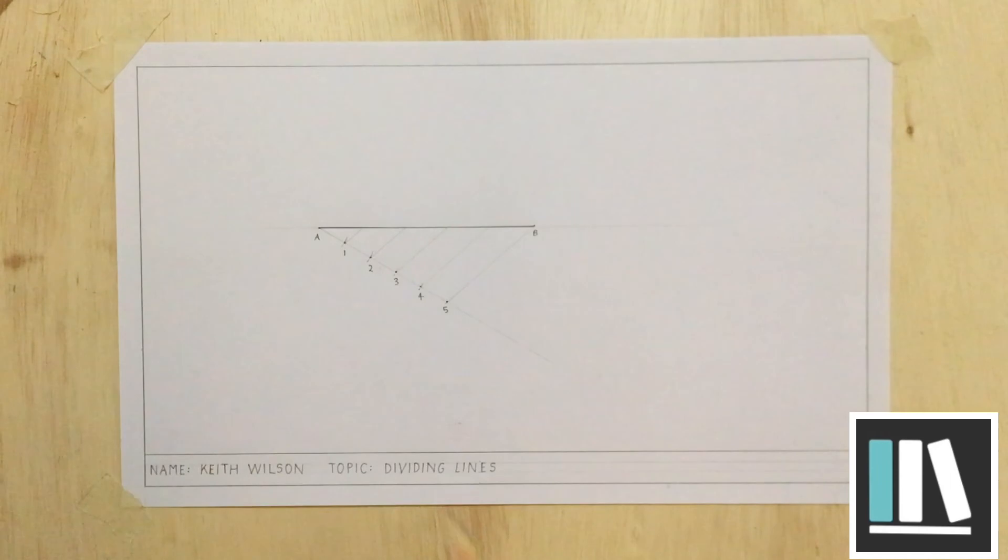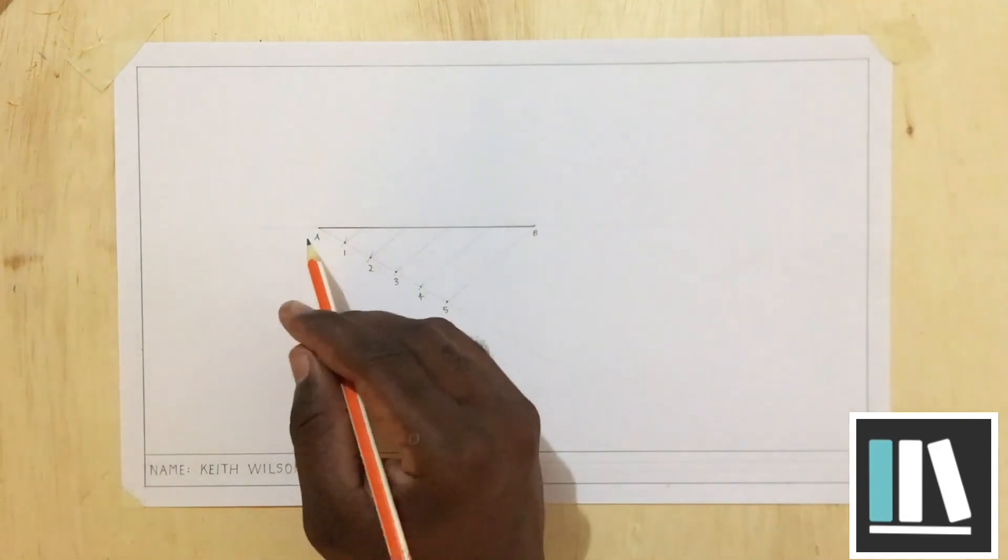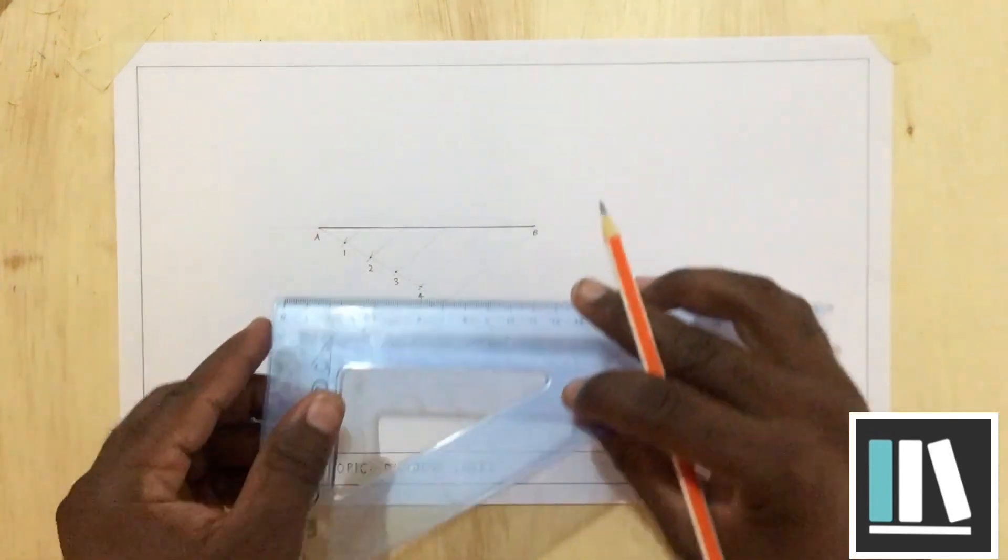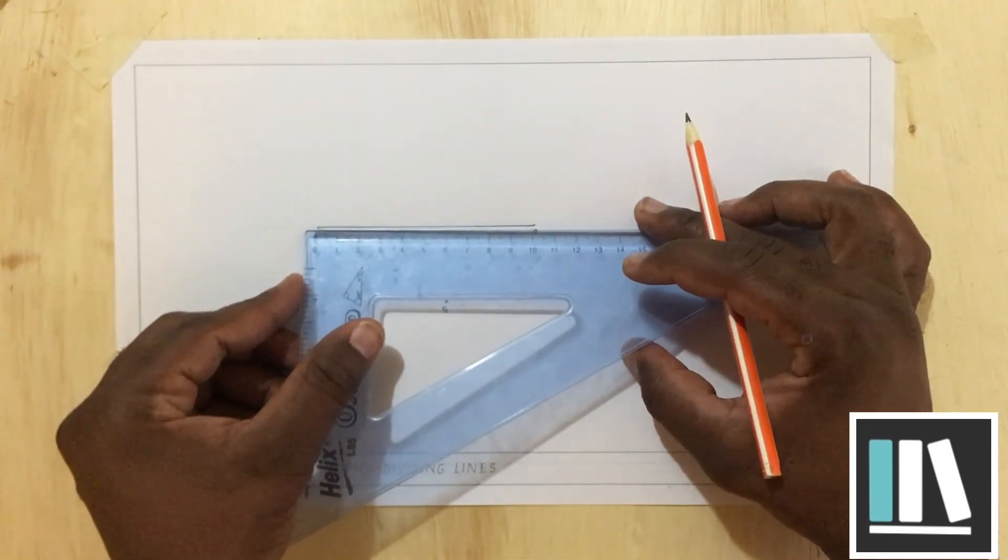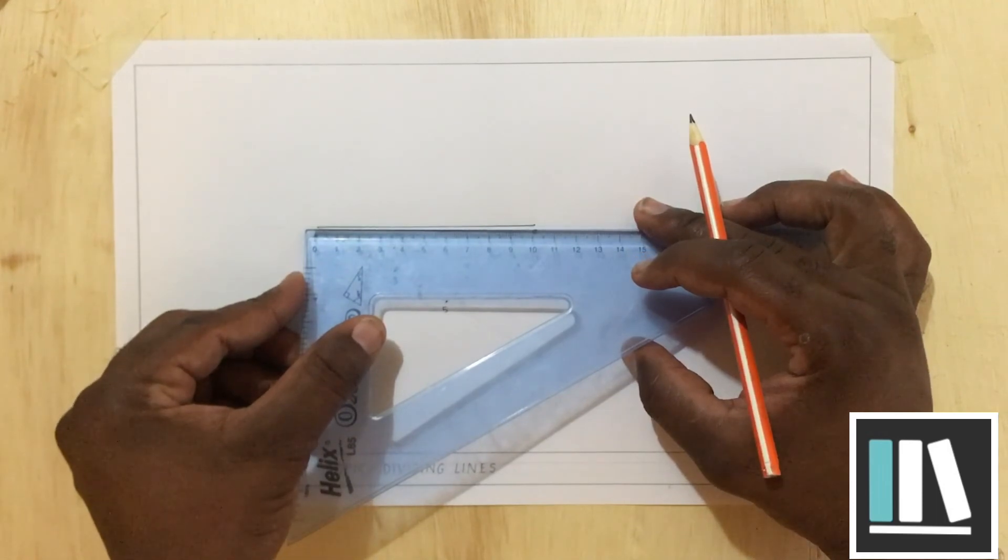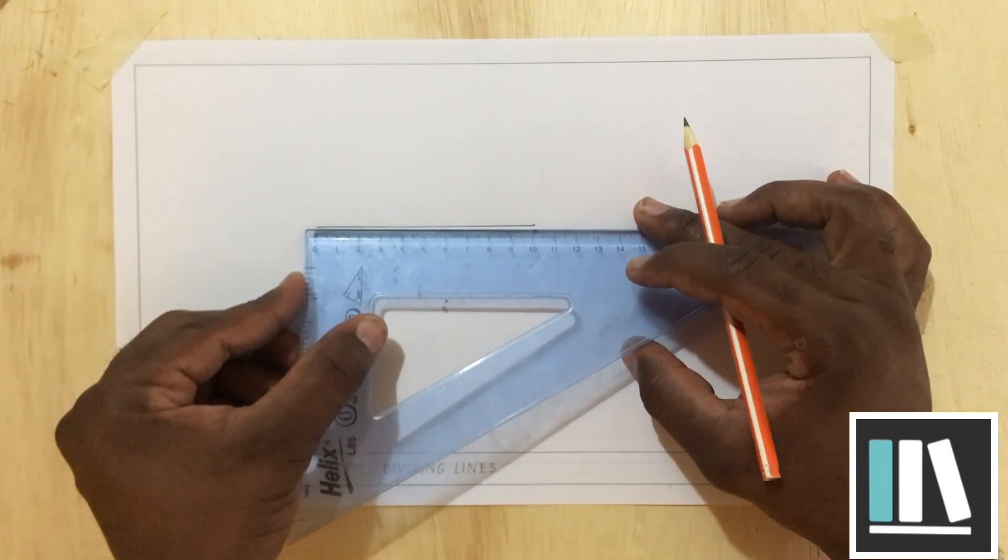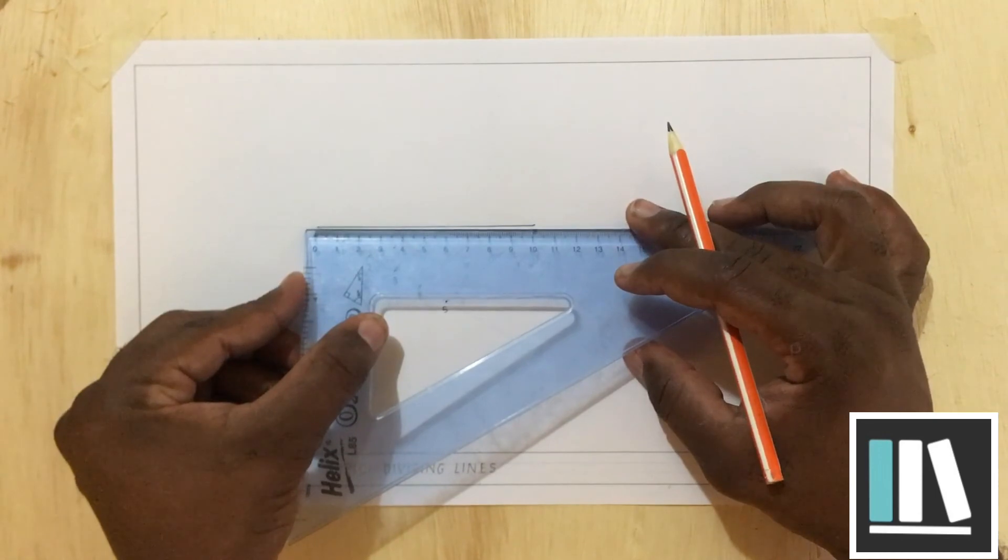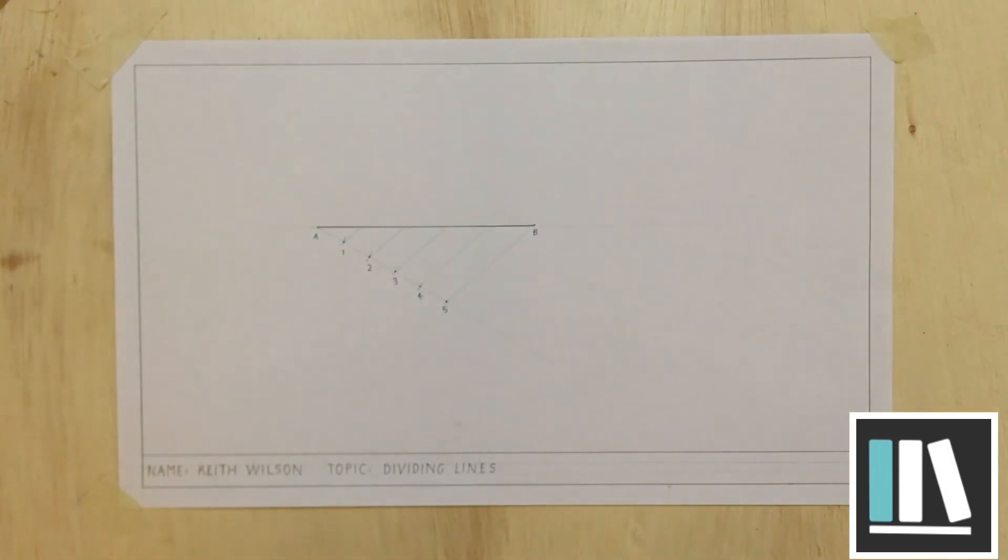If you notice, line AB has now been divided in five equal parts. And to prove this, I am going to measure from A to the first point. And you should get two centimeters or 20 millimeters. The line is 10 millimeters. When you divide a line that is measuring 10 millimeters in five equal parts, each division should measure two centimeters or 20 millimeters. And there you have it. This is how to divide a line in a number of equal parts.